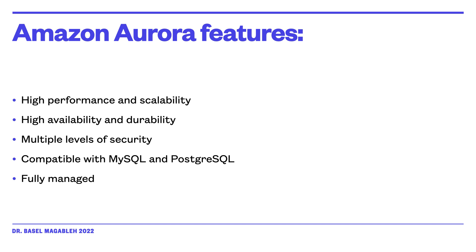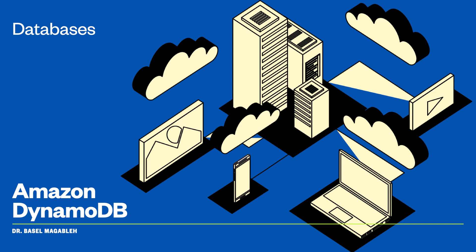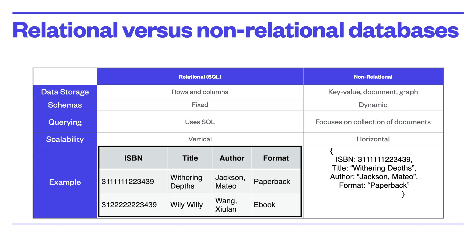Now let us look at Amazon DynamoDB, which is a NoSQL database. A relational database (RDS) works with structured data organized by tables, records, and columns, and establishes well-defined relationships — for example, a teacher teaches many students. We use Structured Query Language to query relational databases. However, with relational databases you may have difficulty scaling out horizontally or working with semi-structured data.